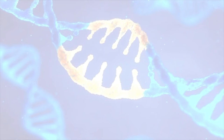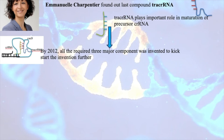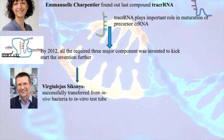These are the things which helped take the CRISPR technology forward into applications. The next important scientist is Emmanuelle Charpentier, who found the last key compound — tracer RNA. The function of tracer RNA is that it plays an important role in the maturation of the precursor crRNA. By 2012, they had found all three major compounds: the Cas9 protein, crRNA, and tracer RNA.